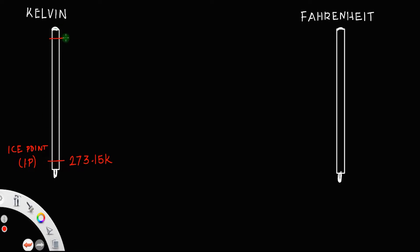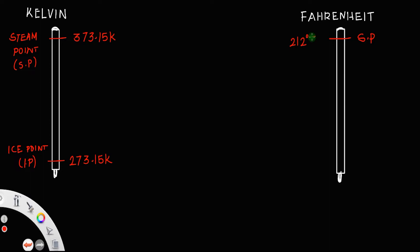The steam point — let us call that SP — the steam point of Kelvin is equal to 373.15 Kelvin. Similarly, for Fahrenheit, the steam point is 212 degrees Fahrenheit and the ice point is 32 degrees Fahrenheit.